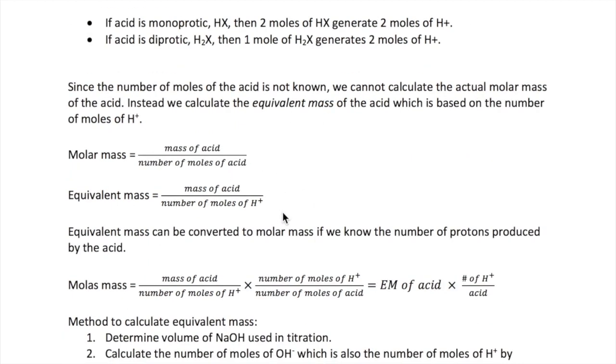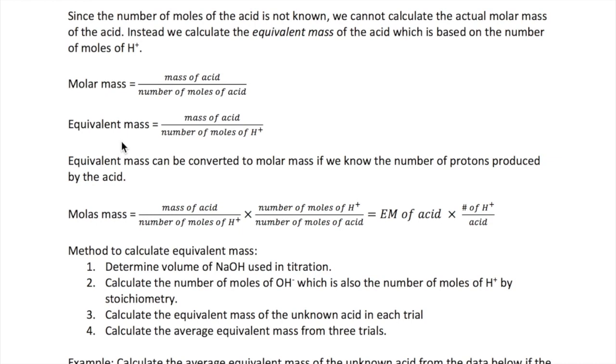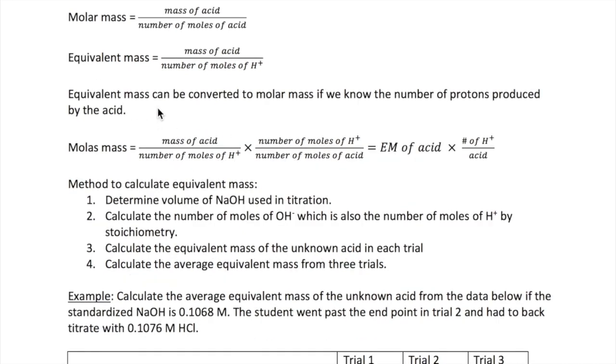As a result, you can't calculate the molar mass of your unknown acid. Why? Well, this is because molar mass is the ratio of mass of acid to number of moles of acid. Because we don't have number of moles of acid, we can't get our molar mass. However, we can calculate a related quantity called the equivalent mass, which is just the ratio of mass of acid to number of moles of proton. Notice that the equivalent mass can be converted to molar mass if we know how many protons the acid produces, as shown in this equation right here.